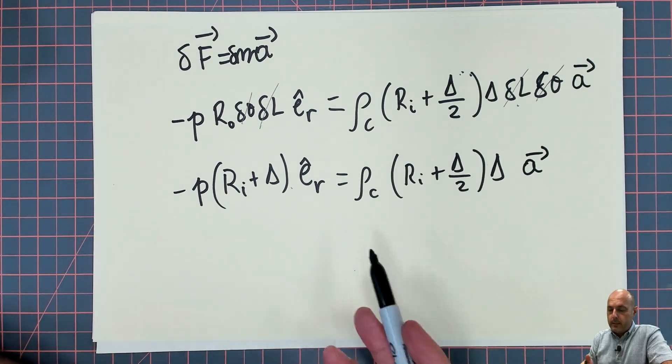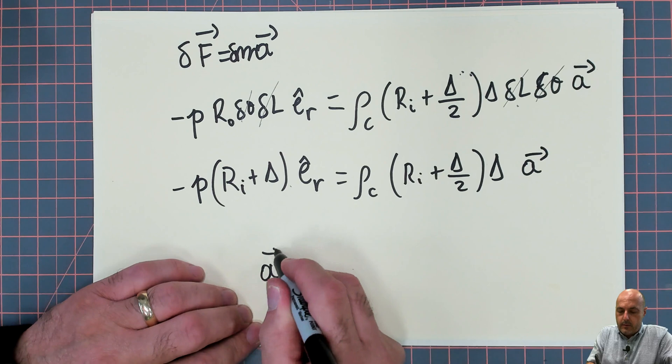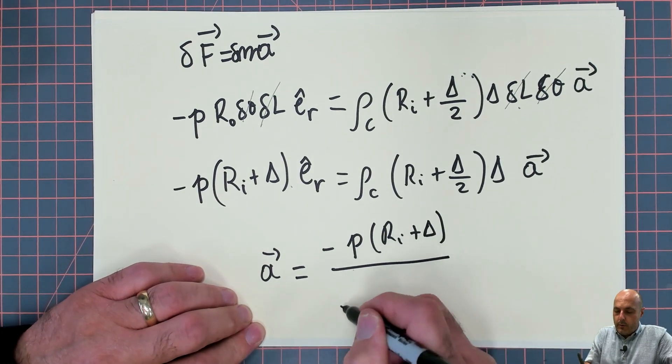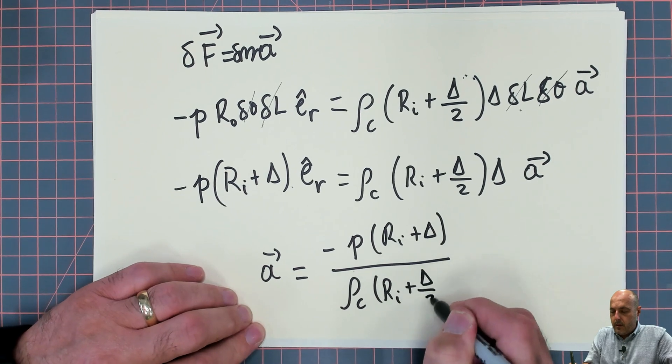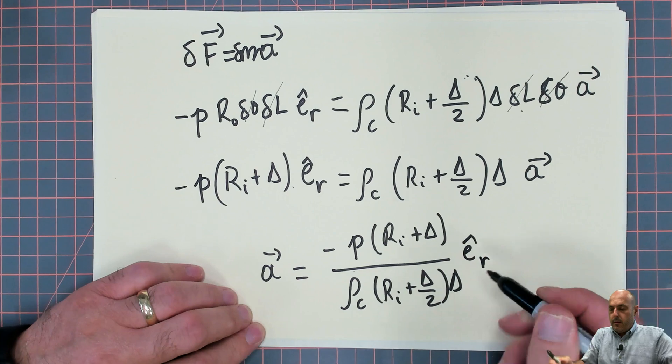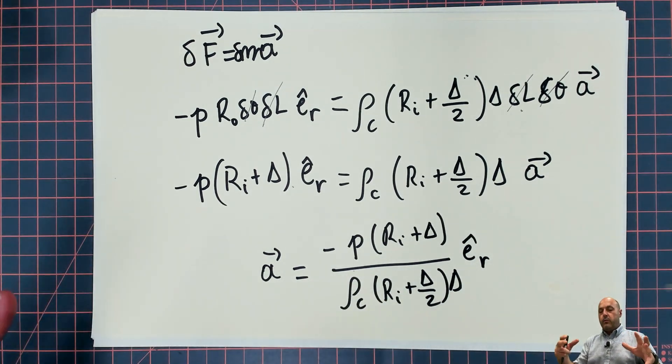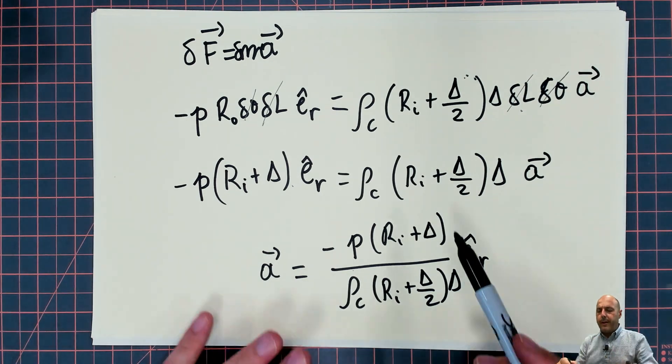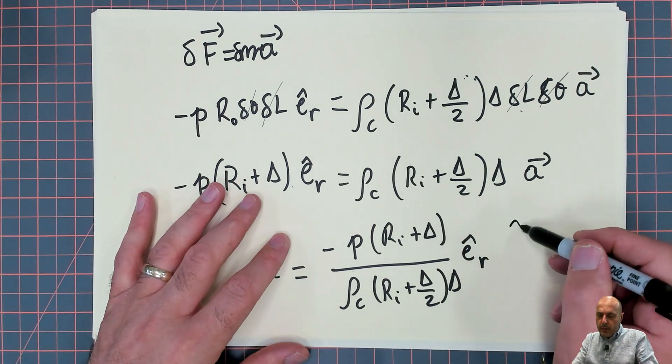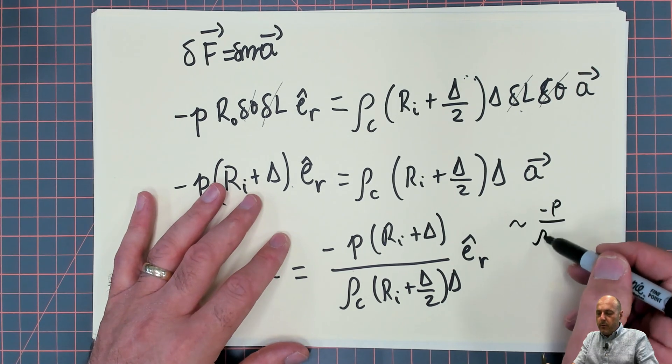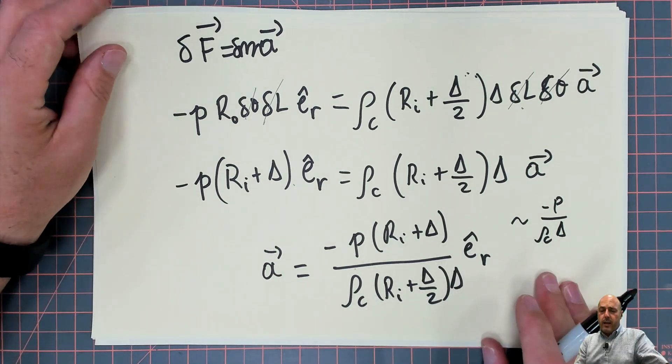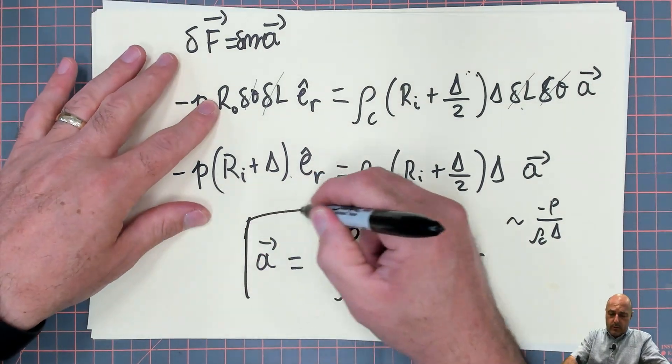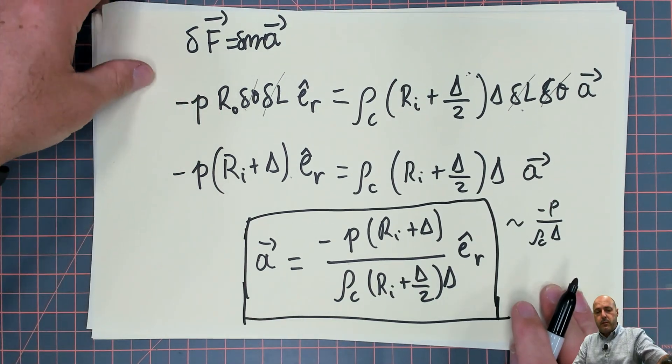So from that we can deduce the acceleration, and we say that the acceleration is equal to minus P R_I plus delta over rho_C R_I plus delta over 2 times delta in the inward direction. So indeed as expected, this acceleration is pushing inward. You can simplify this, say R_I plus delta over 2 delta is so small compared to R_I, and these practically cancel out. So you could potentially approximate this by saying the acceleration is minus P over rho_C delta, if you want to get some estimates. But we can actually punch in some real numbers over here and get actual values for this. Now we're still left with the pressure, so this is our equation for the acceleration of that fluid element. We still need to compute the pressure. The pressure is easily computed.